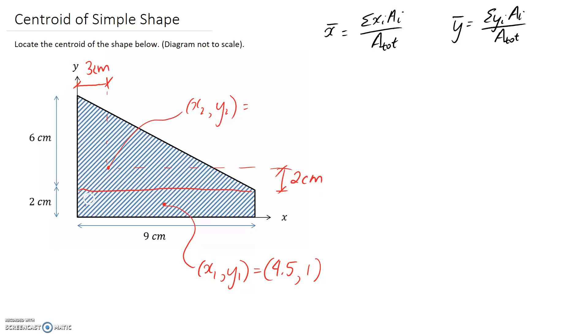Now we just need to reference it back to the origin. For the x-coordinate, we need to go this far across, which is the same as the 3 centimetres we already wrote down. For the y-coordinate, though, starting at the origin, we need to go up 2 centimetres, and then up again a little bit to reach the 1/3 mark. So it's going to be this 2 centimetres plus the 2 centimetres in here, which is 4.